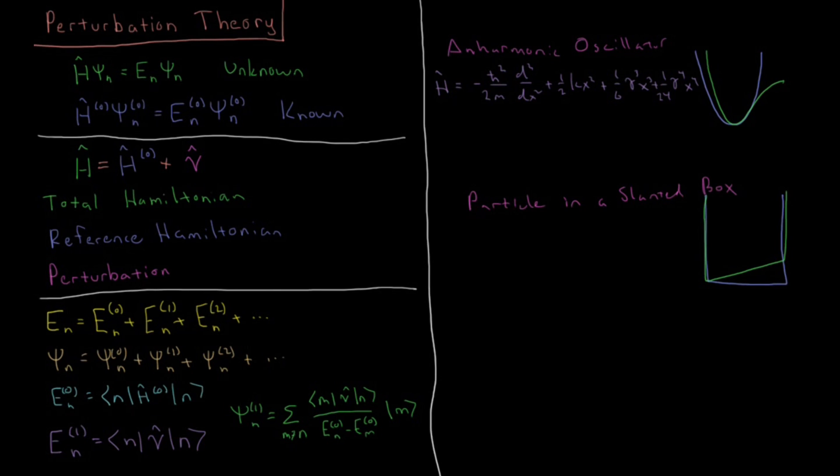And what we can break this into is we have our reference Hamiltonian, which is the harmonic oscillator Hamiltonian. Our reference Hamiltonian, H0 here, is that, and our perturbation is the anharmonic term, which is going to be there, the cubic and quartic terms, which make it deviate away from this blue harmonic type term.